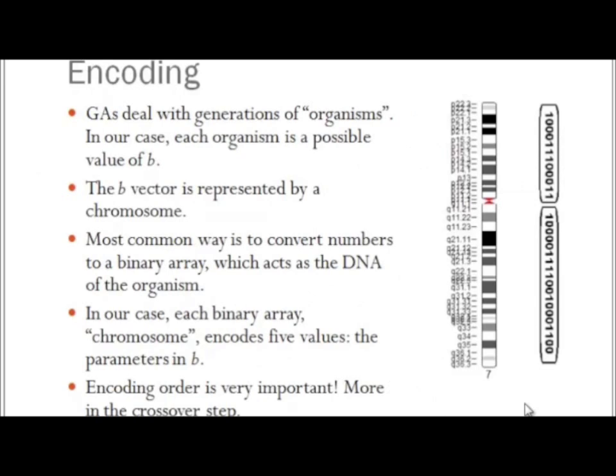First, we need to encode our possible solutions into the DNA of our organisms. Each proposed solution is an organism, and we need some way to represent that solution as DNA in a chromosome. For our case, we have five numbers: base temperature, max temperature, x0, y0, and lambda, and we will do what is actually normally done. The most common way to do this is to convert to binary. So we have an array of ones and zeros that represent our numbers, and this serves as a valid chromosome. Each organism has one chromosome. Each chromosome encodes five numbers, and encoding order is very important. It's important what is next to what, and we'll discuss that more in the crossover step. But for now, convert to binary, and that's our DNA.